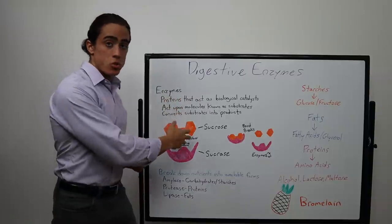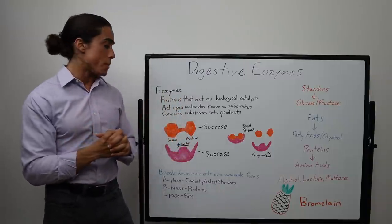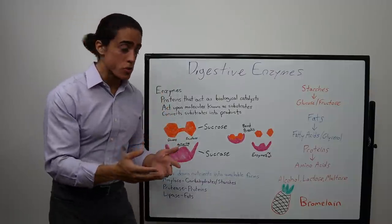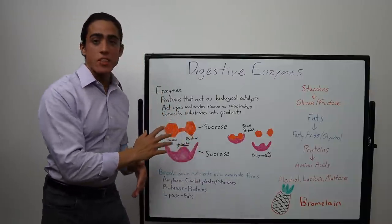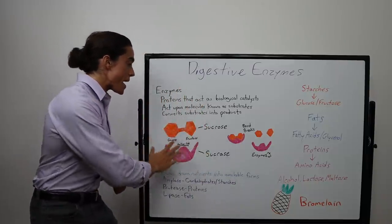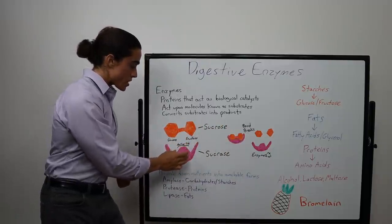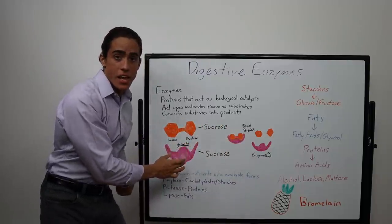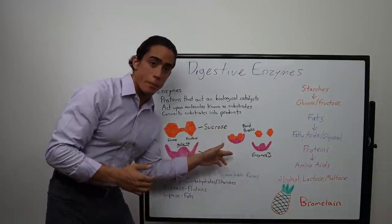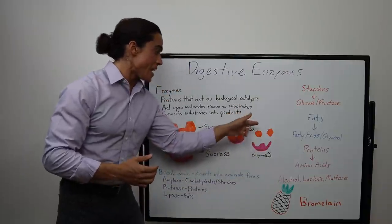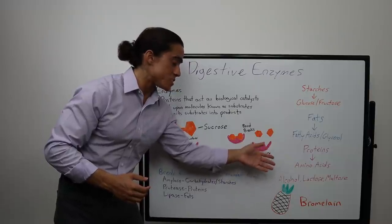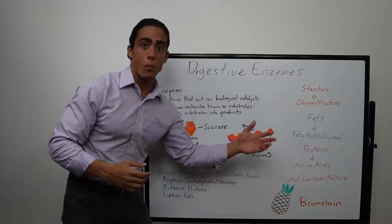One substrate, for example, is sucrose that is contained in high amounts in table sugar. Sucrose is glucose bound to fructose, but when it's bound together, our body can't utilize it. So the sucrase enzyme binds to the sucrose — they kind of fit together at the active site on the enzyme. When that sucrase enzyme binds to the sucrose, it places stress on the bond, breaking it, and then you end up with the glucose and the fructose separated. Then that sucrase enzyme can go on to break down more sucrose.